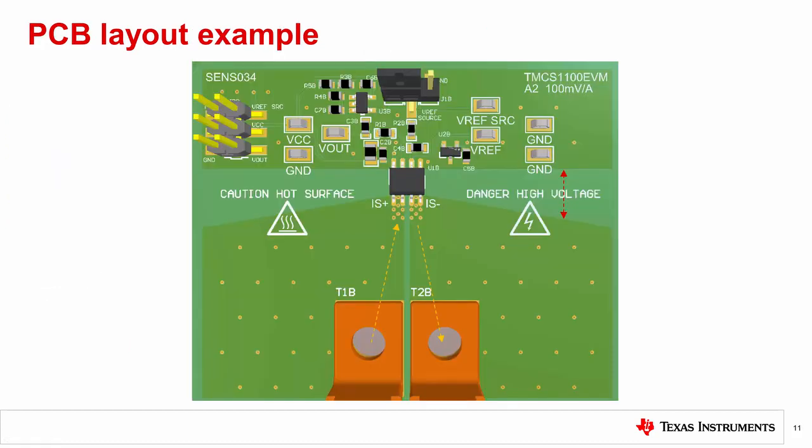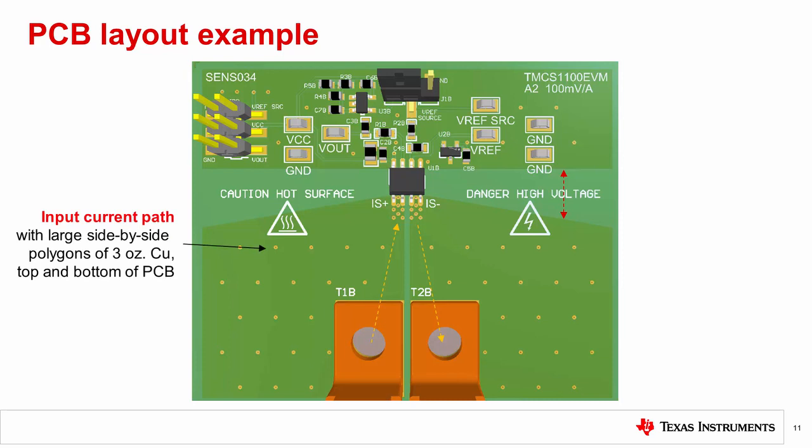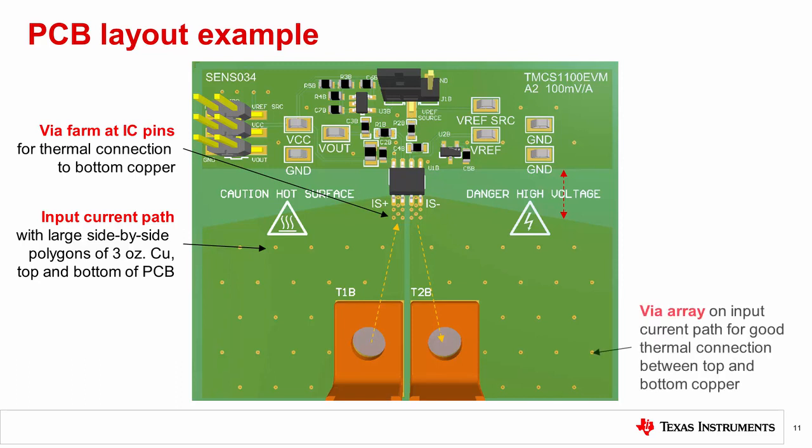Achieving good performance with in-package magnetic current sensors, while also ensuring good thermal capability and safety, requires careful attention to be paid to the printed circuit board layout. The example here, with the TMCS1100 EVM, shows several of the most beneficial PCB layout techniques for these devices. TI recommends these best practices for optimal thermal capability. Use large copper areas for the input current path, placing 3-ounce copper on both top and bottom layers of the PCB. Place an array of vias right at the IC pins to help sink heat out of the lead frame. Also, place an array of vias throughout the input current path to ensure a good thermal connection between top and bottom copper.